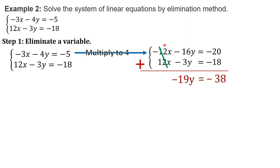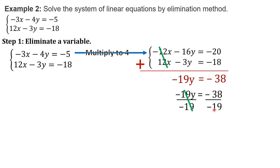Since we have eliminated the variable x, we are now solving for y. To solve for it, we have to remove this negative 19 by dividing both sides by negative 19. Cancel negative 19. Then, negative 38 divided by negative 19 — they are both negative, so the answer will be positive. 38 divided by 19 is equal to positive 2. Therefore, the value of y is equal to positive 2.